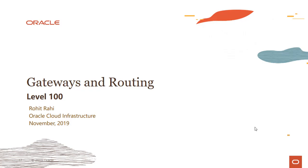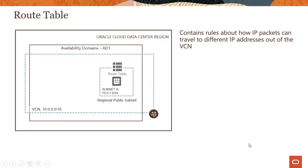I'm Rahi and I'm part of the Oracle Cloud Infrastructure team. In this module, we'll look through the various gateways provided by the OCI Virtual Cloud Network service. Before we get into any of the gateways discussion, we need to understand the concept of route tables. You saw this earlier in the demo when we were introducing a virtual cloud network — we did create a route table in the VCN service when we were using the console.